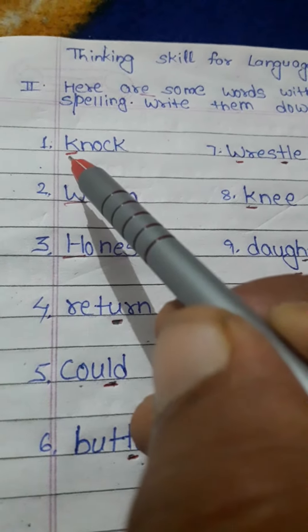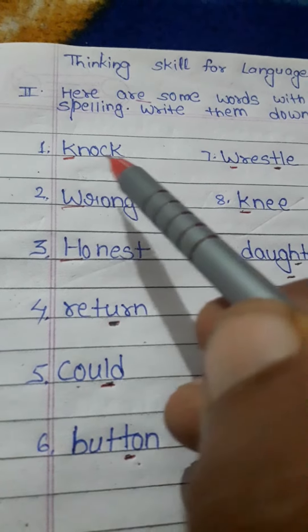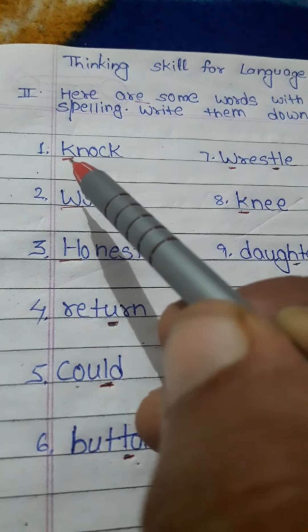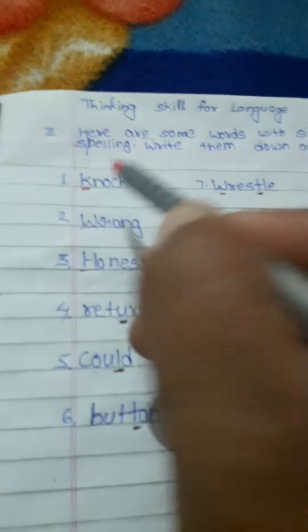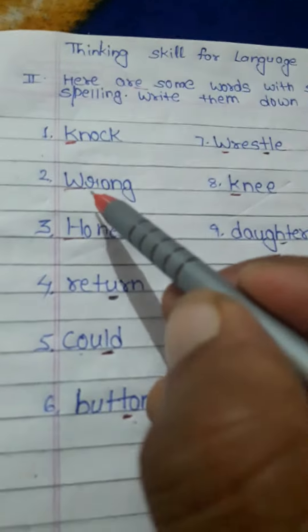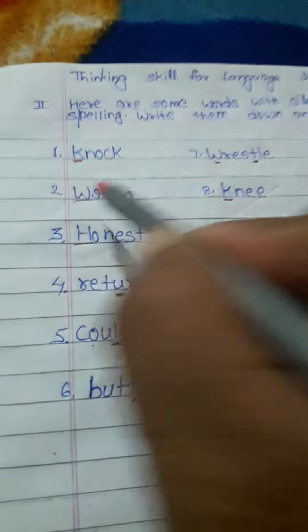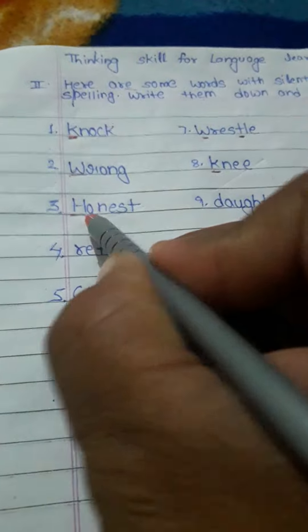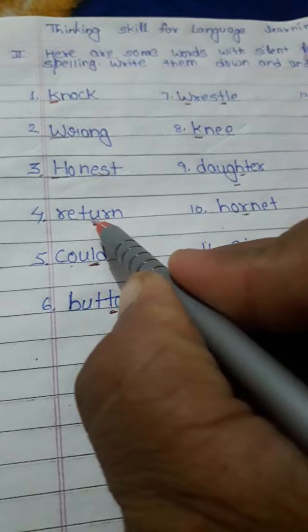As for example, knock — in the word knock, the initial K remains silent, so it has been underlined. Second, wrong — W remains silent. In honest, H remains silent. Return — here, U remains silent.